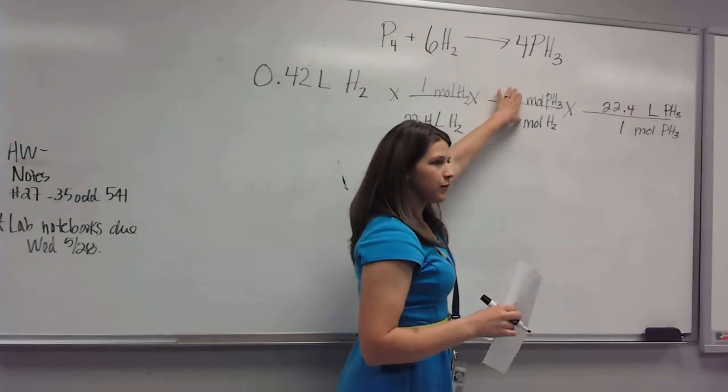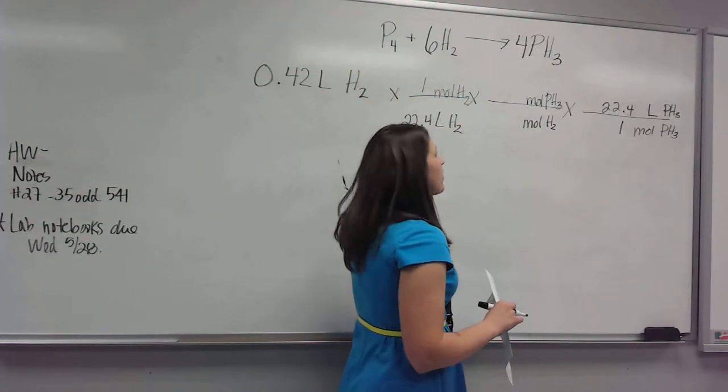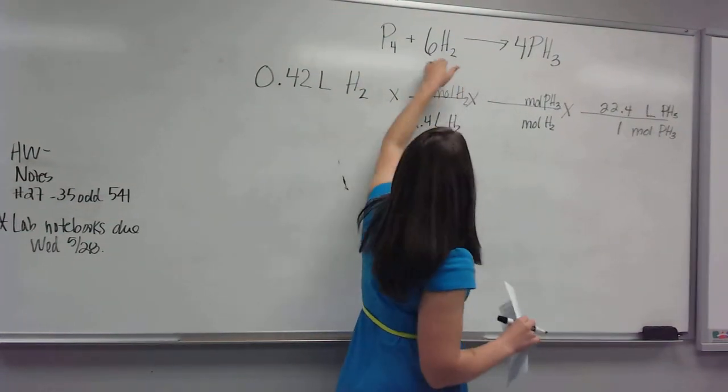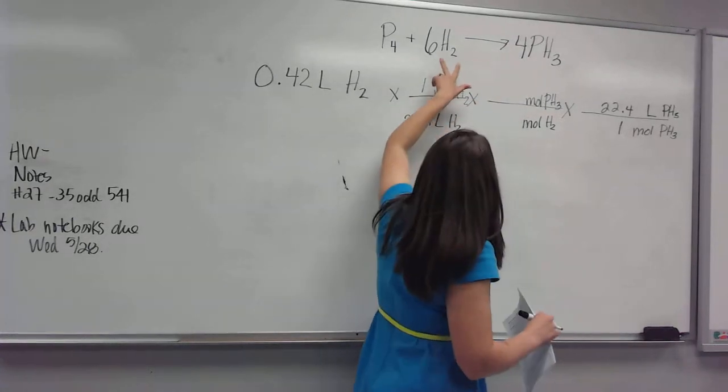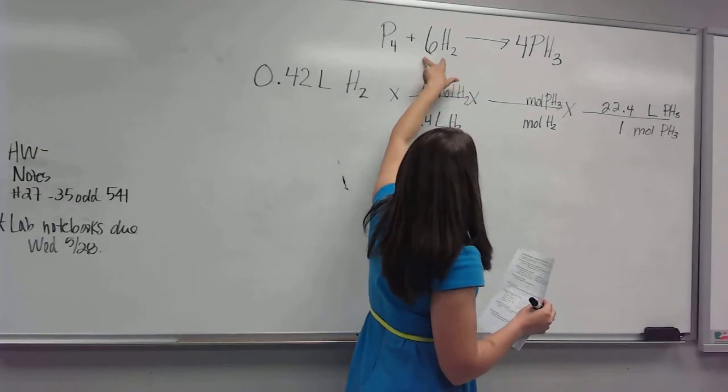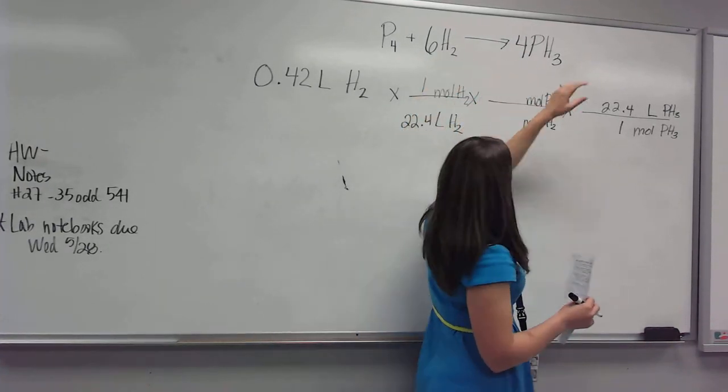Where did this middle conversion come from? The equation, right? And is our equation balanced for these? I think, oh, no, that's right. 6 times 2 is 12. 4 times 3 is 12. Okay.